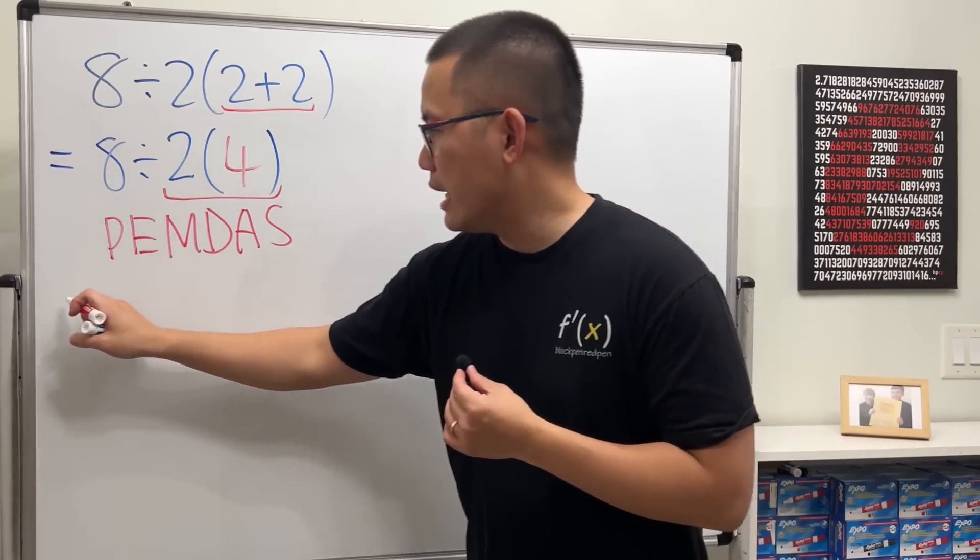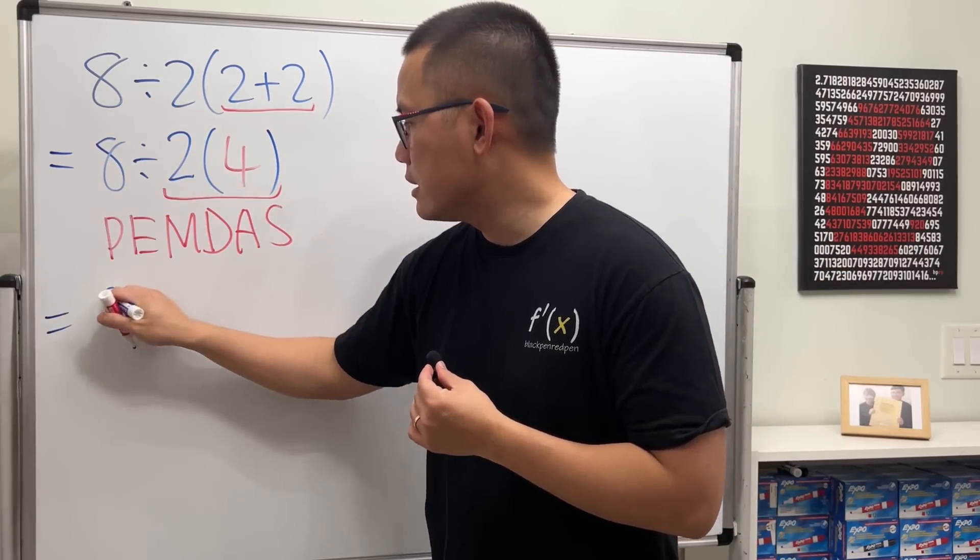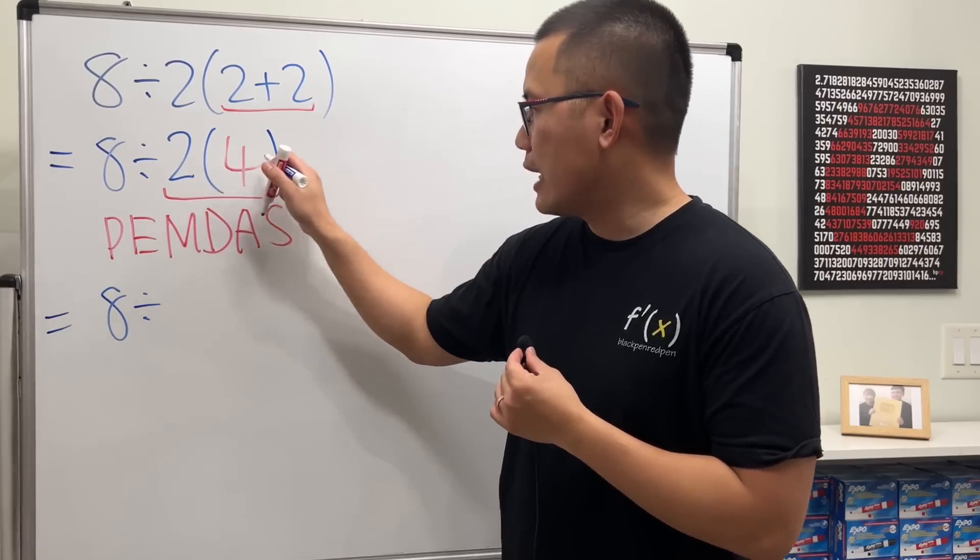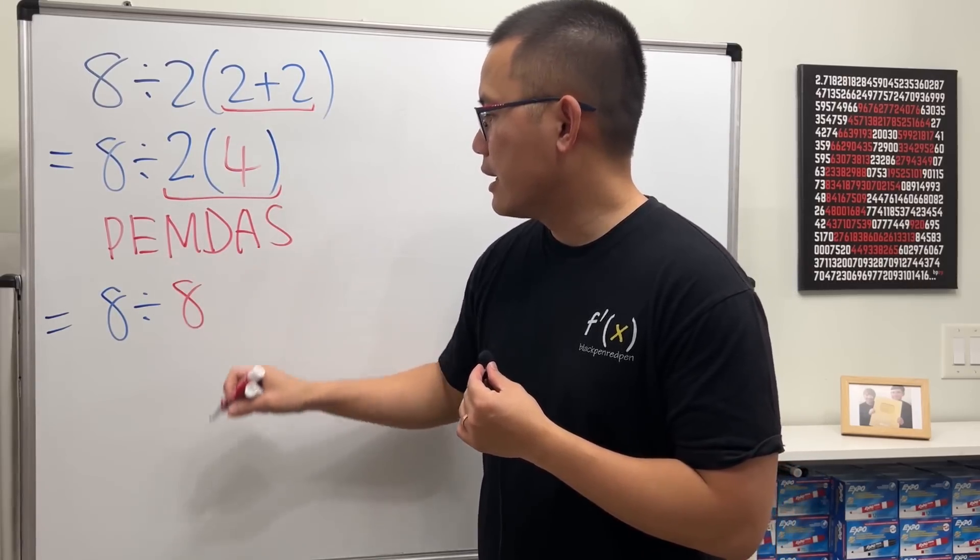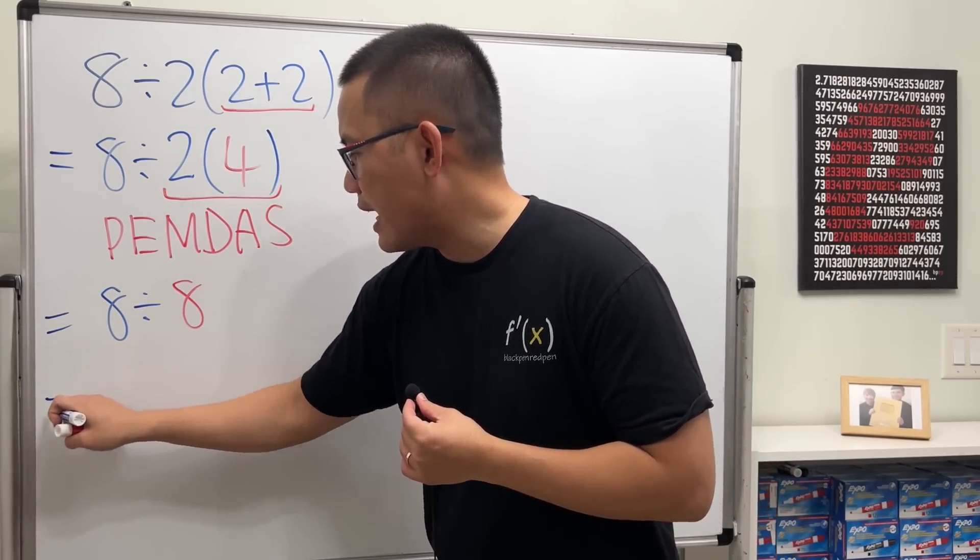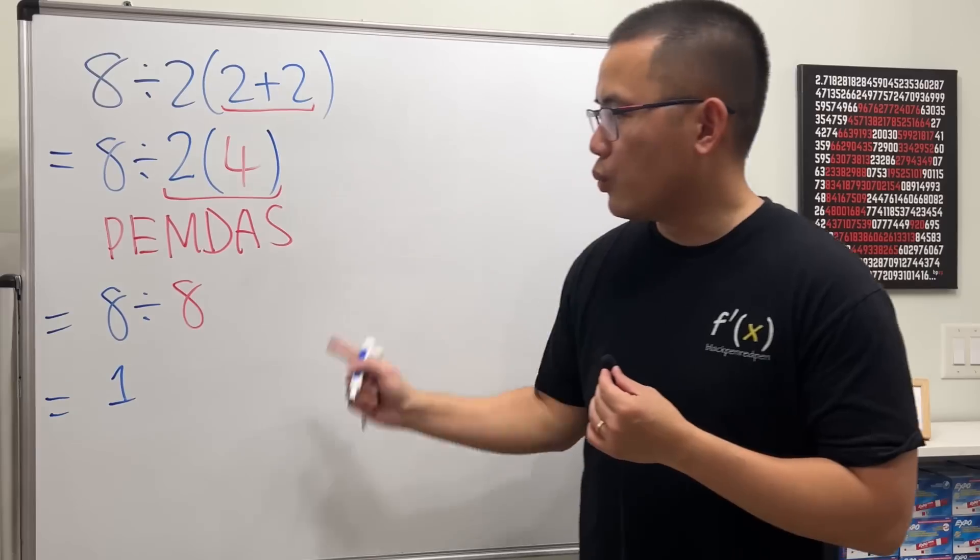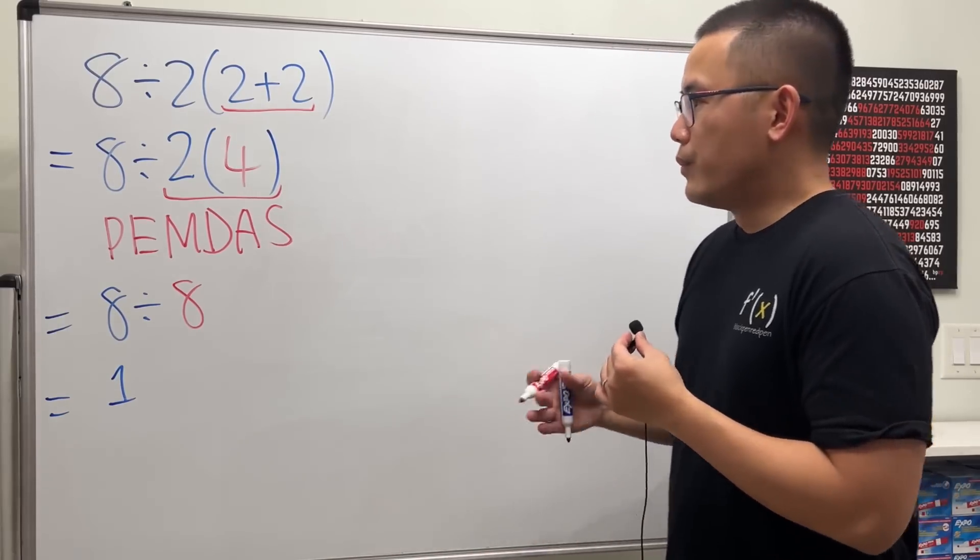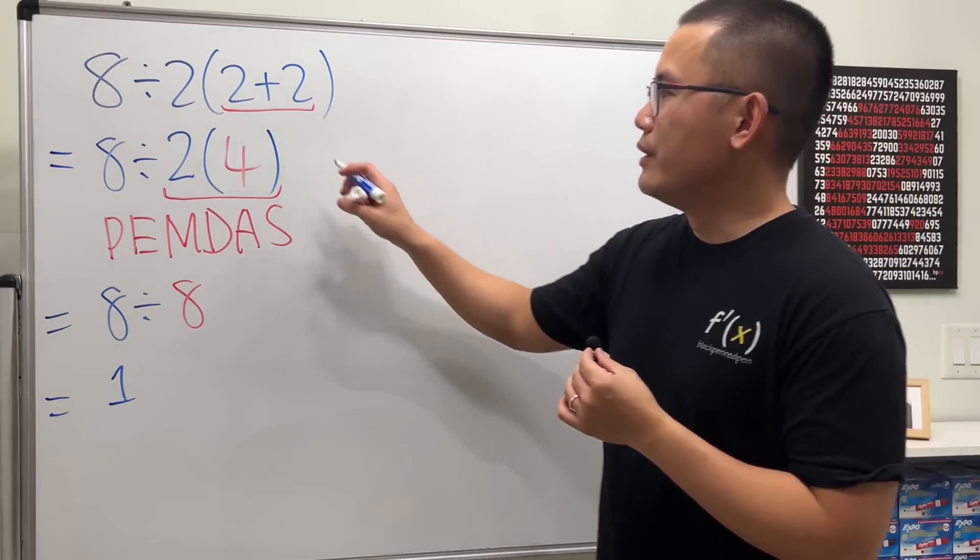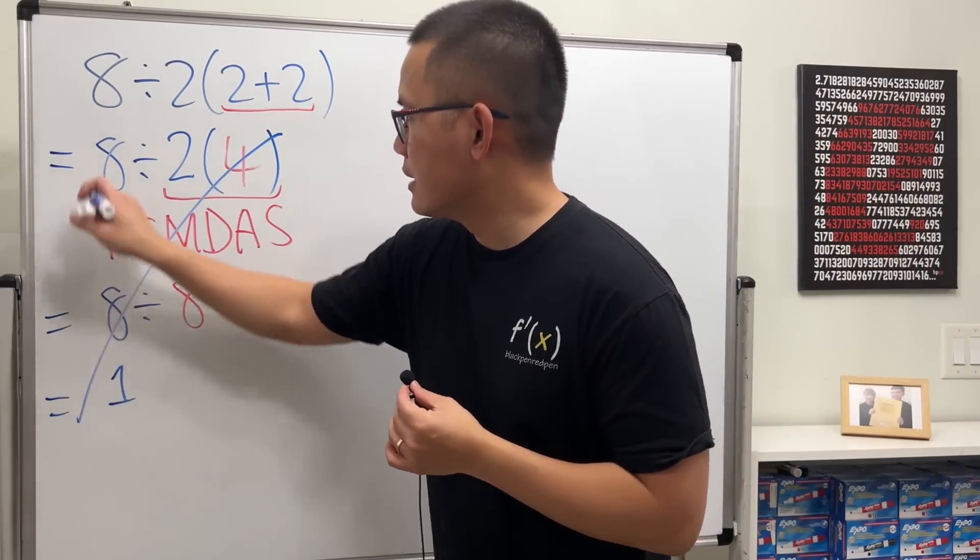We end up with 8, keep the division, 2 times 4 is 8, and now we can just go ahead and divide and we end up with 1. Well, I will tell you: No, this is not correct. This is not correct.